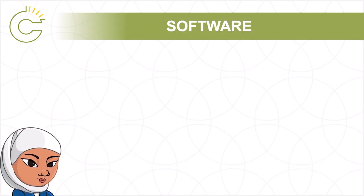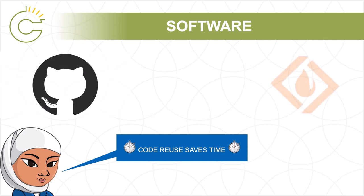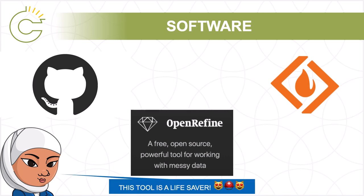If Ira needs software to help with her research or is looking for source code she can incorporate with her own projects, she might try websites like GitHub and SourceForge. For example, if Ira finds open data to use for her thesis, she might use a free and open source tool like OpenRefine, which is from GitHub, to clean it up for analysis.